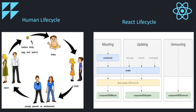Now let us understand how React lifecycle methods differ from a human lifecycle. On the screen you can see two diagrams: the first is the human lifecycle diagram and the second is the React lifecycle diagram. In the human lifecycle there are different stages — a baby is born, then comes childhood, then adolescence, then adulthood, and finally death. Similarly, in React a component is first mounted, then updated, and then unmounted.